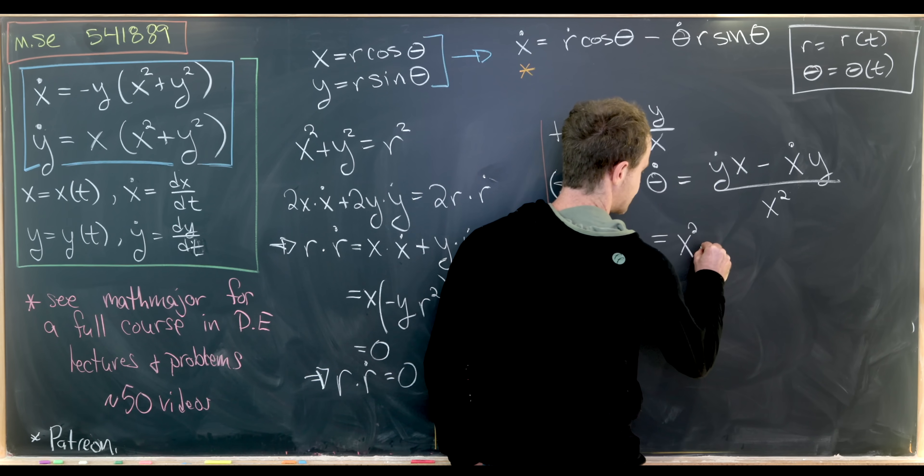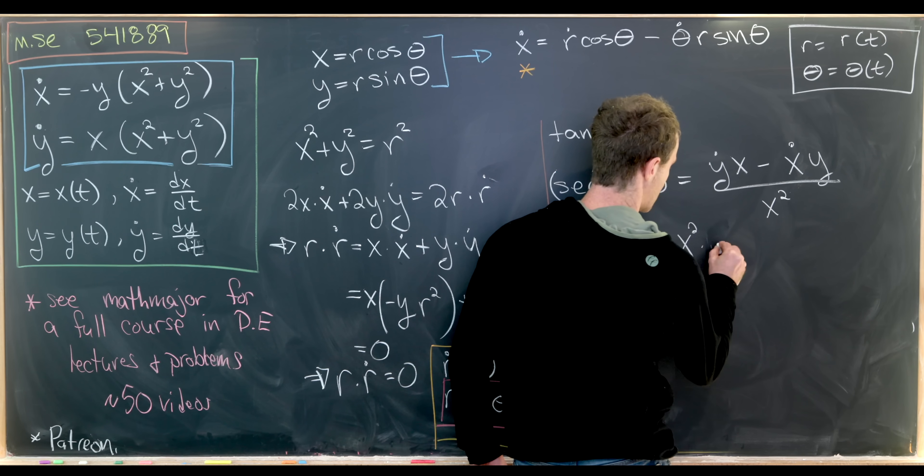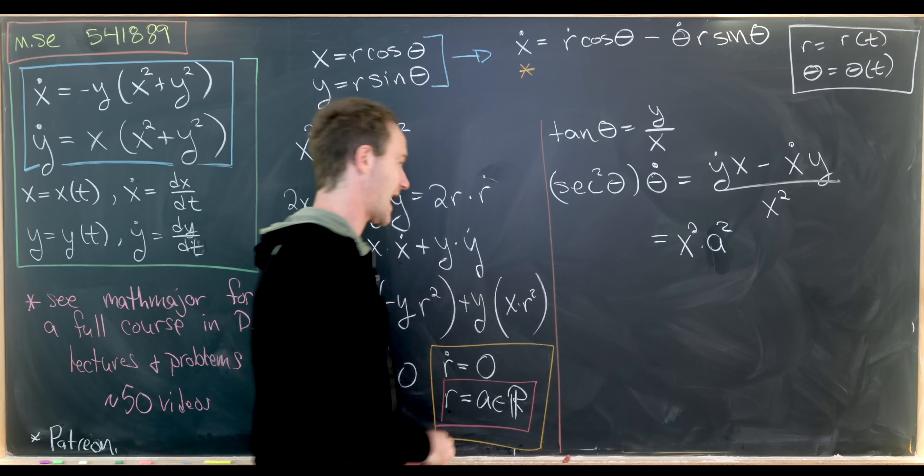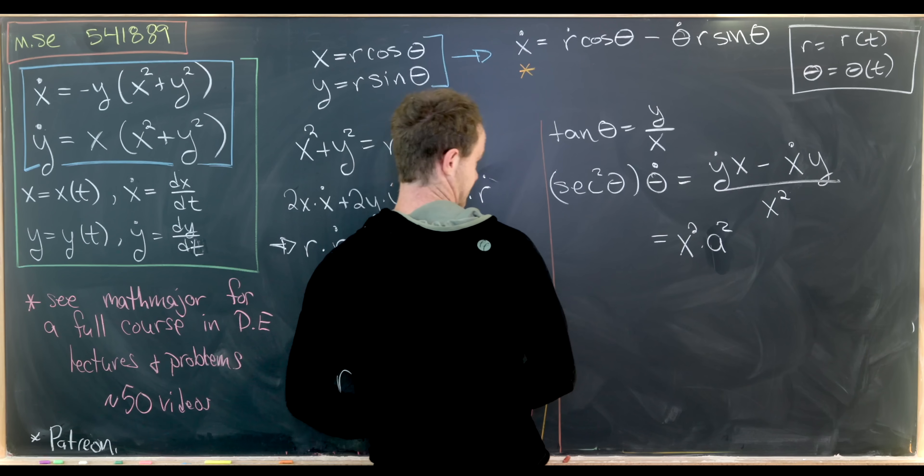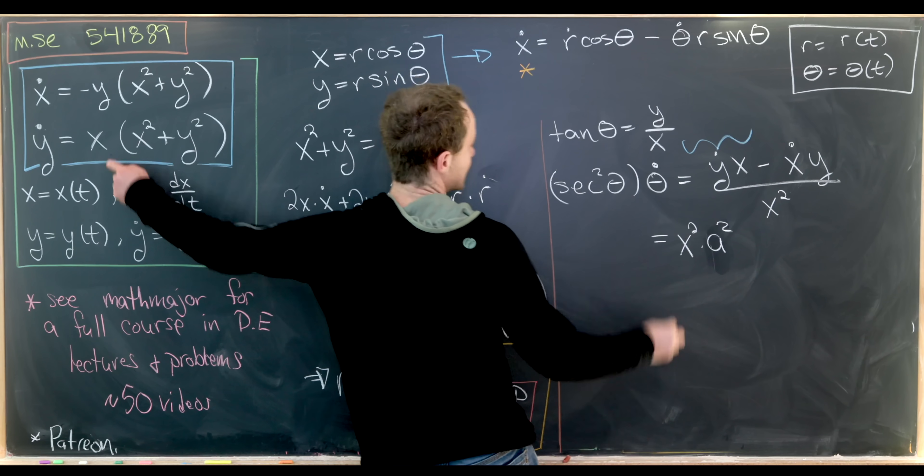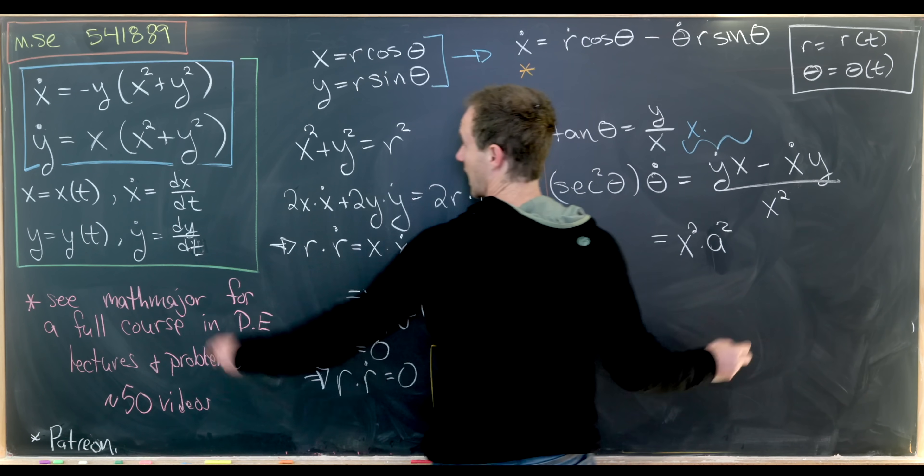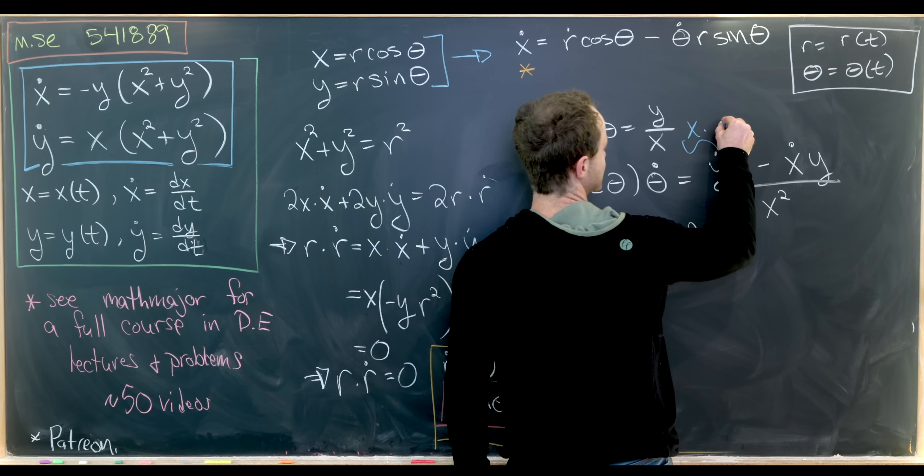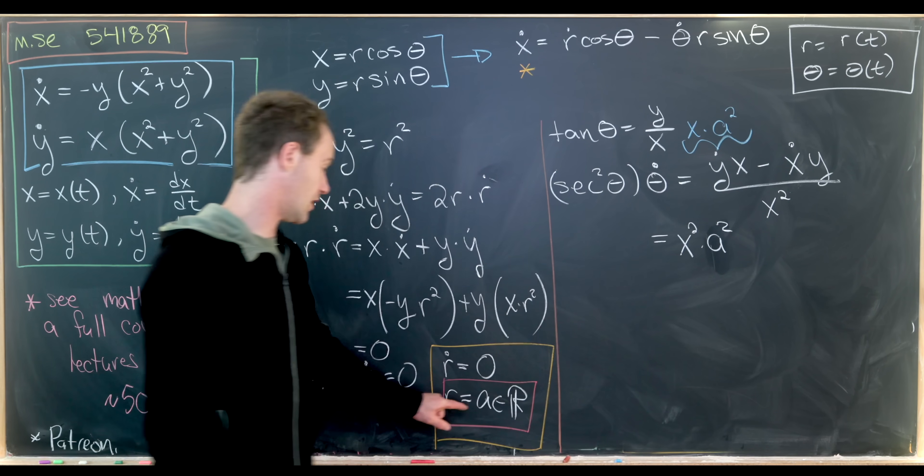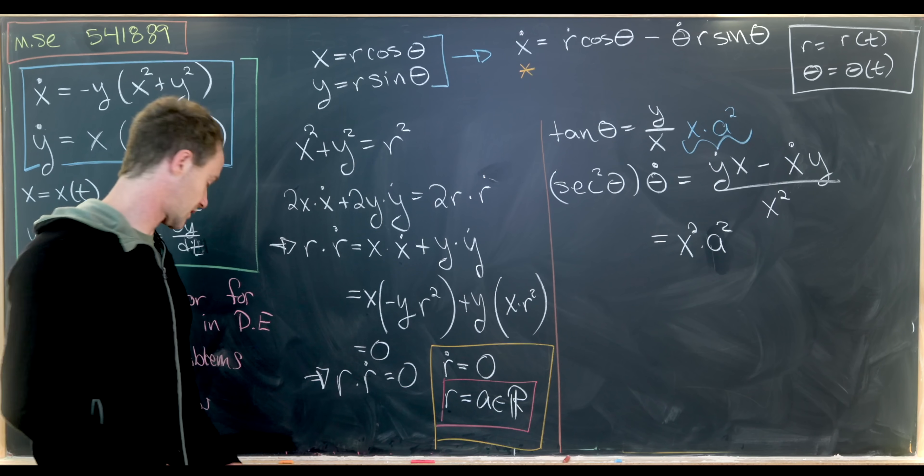x squared times r squared. But notice r squared is just a squared. So just to reiterate what happened there: I took this y dot and I expanded it into x times (x squared plus y squared). But x squared plus y squared is r squared. But r is this constant a from our previous work.